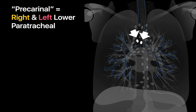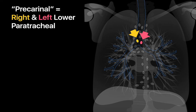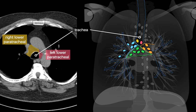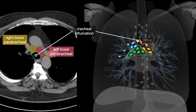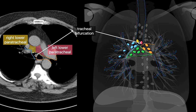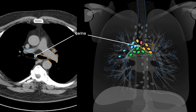One brief comment about lymph nodes immediately anterior to the tracheal bifurcation: these are not right or left hilar, and they're not subcarinal. Although the term precarinal is sometimes used, it is not an official IASLC lymph node station. Instead, it's best to call these right lower paratracheal 4R and left lower paratracheal 4L lymph nodes, which continue inferiorly to the tracheal bifurcation, extending laterally to the hilar stations, and ending at the carina where the subcarinal station begins.